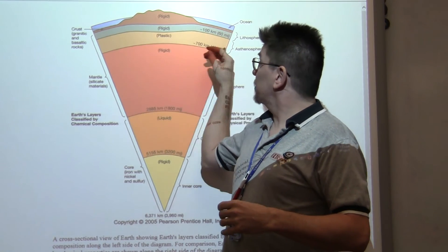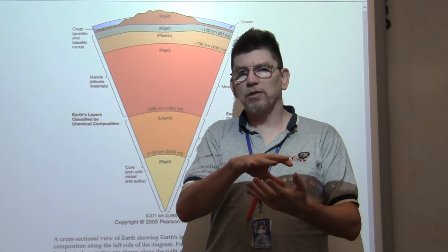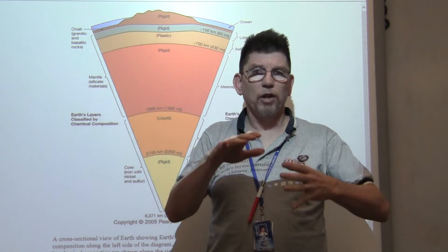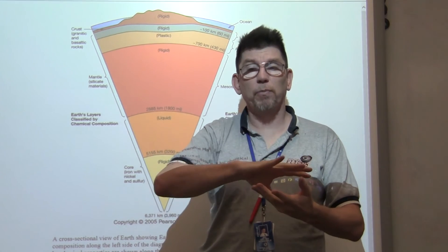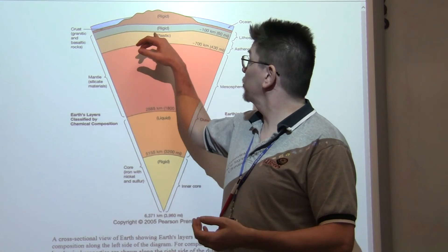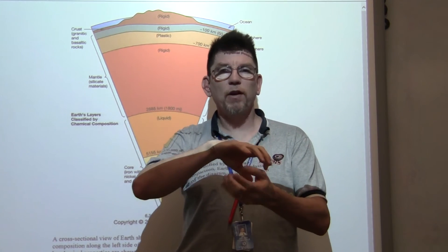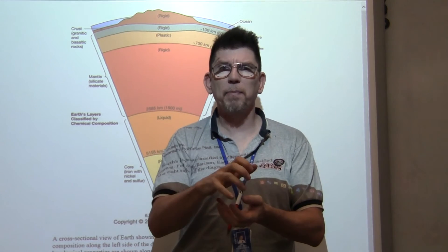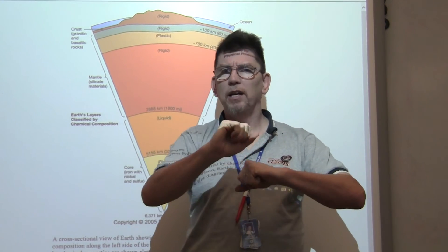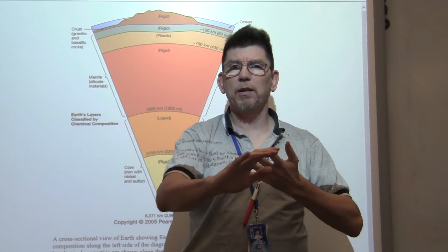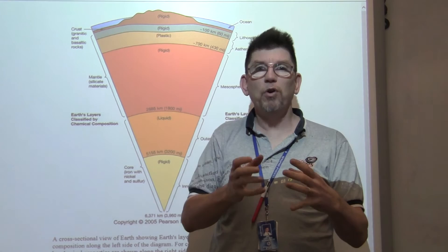Once we get down to the asthenosphere, at that temperature and pressure, we have the rocks are a little more dense, a little more iron and magnesium, a little less silicon and oxygen, a little more dense. At that temperature and pressure, they get soft, soft enough that they can flow. They're kind of like silly putty, like a plastic kind of thing. It can flow, it can move. Not like a solid rock.